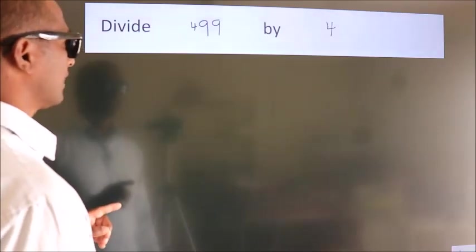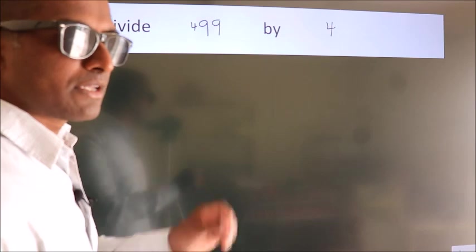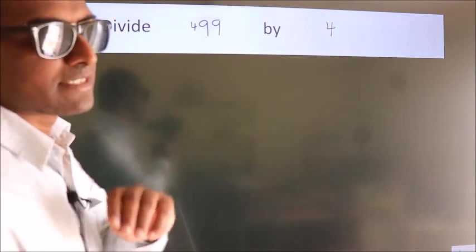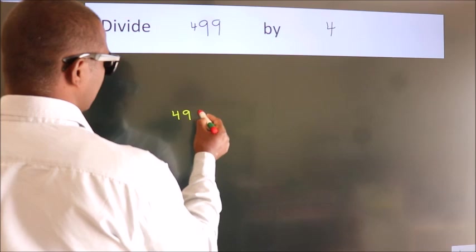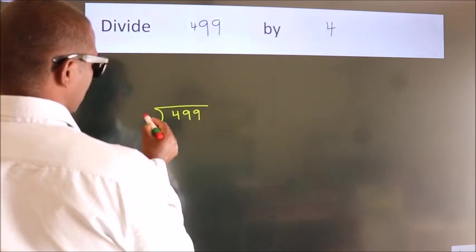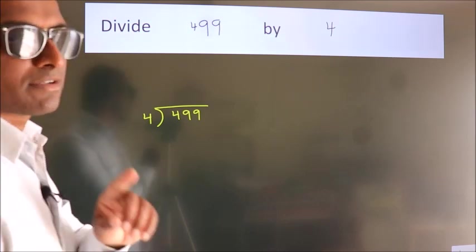Divide 499 by 4. To do this division, we should frame it in this way: 499 here, 4 here. This is your step 1.